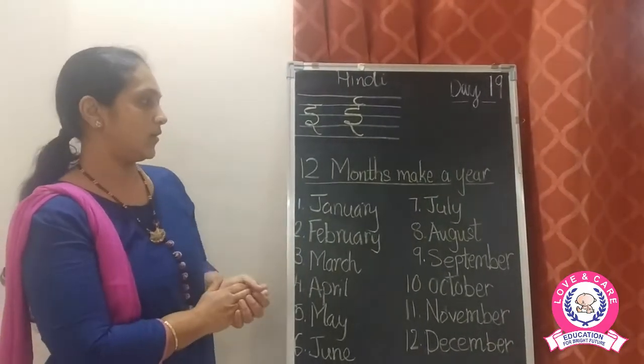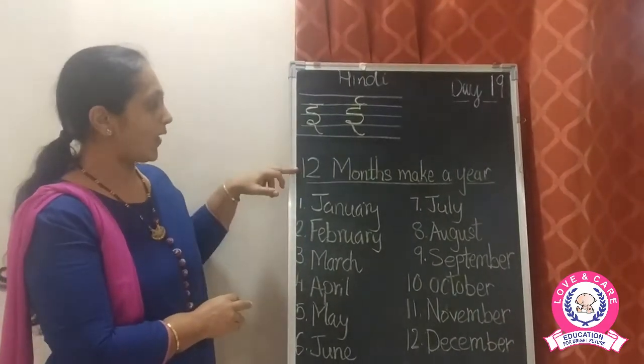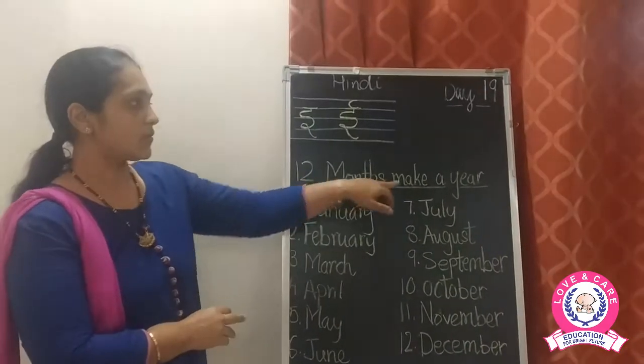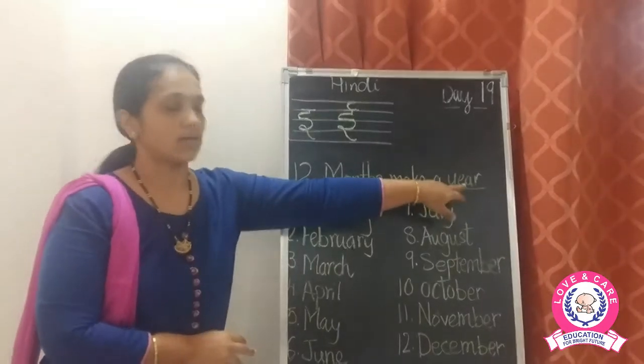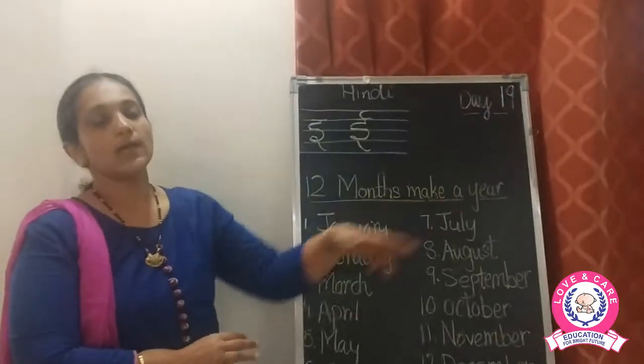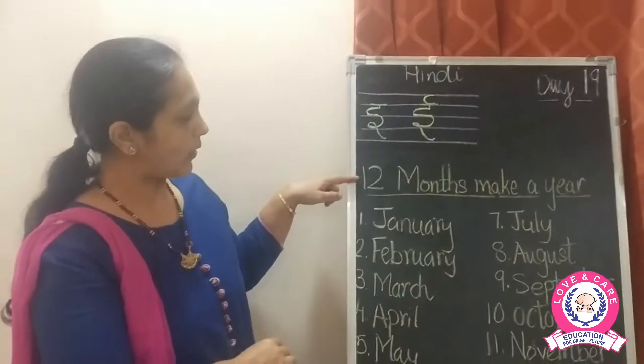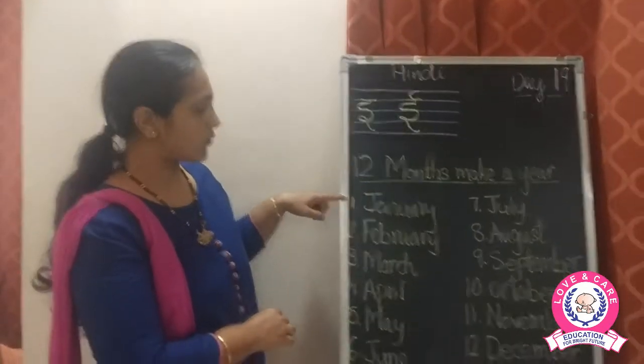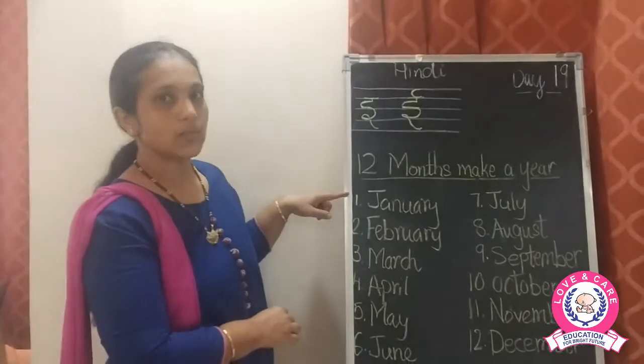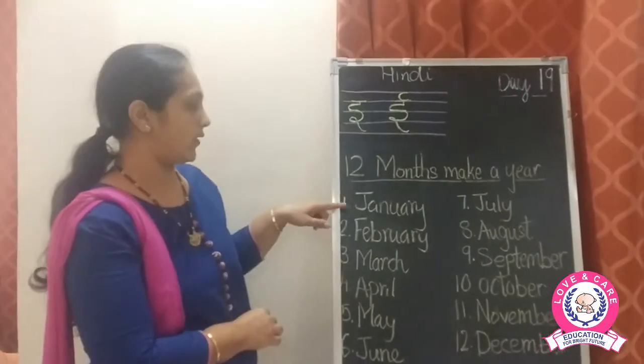Now we have done the days of the week, and now we are going to do the months of the year. 12 months make a year — ek saal mein kitne months hote hain? There are 12 months. It starts with the first month: January.